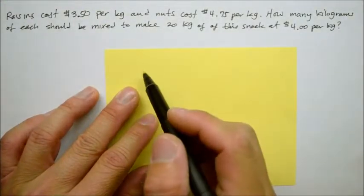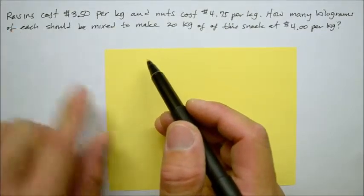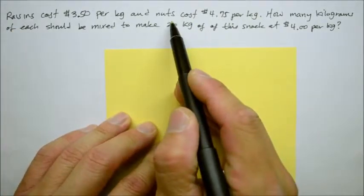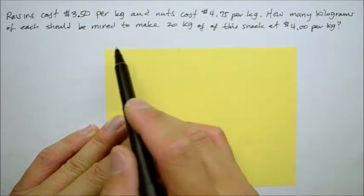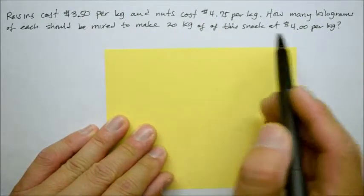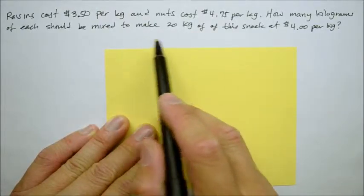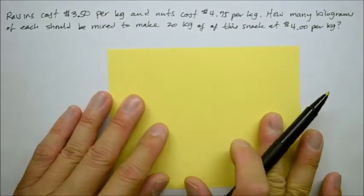Anytime they give you two different things, like in this case raisins and nuts at two different costs, and they're asking about either what is the new price if you mix them or how many units do you need each to get that price. Here's how it works.